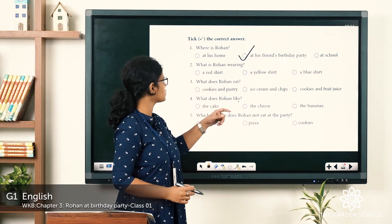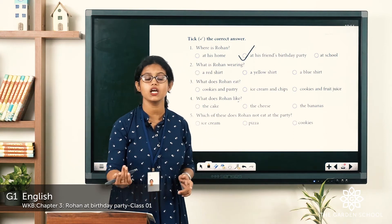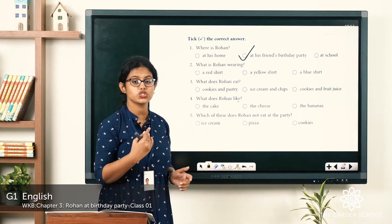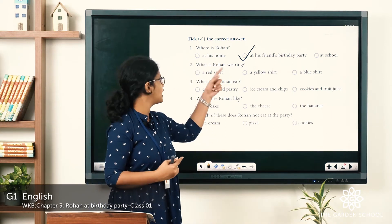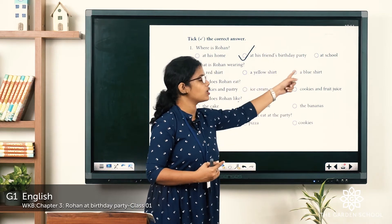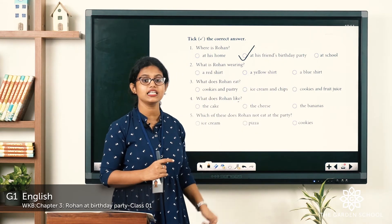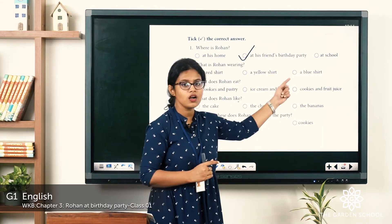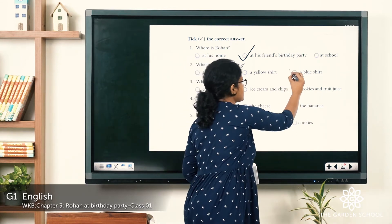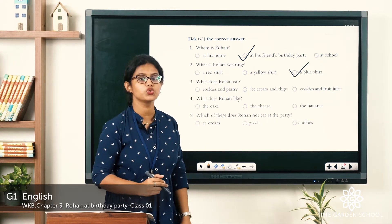Question two: What is Rohan wearing? The options are a red shirt, a yellow shirt, or a blue shirt. The passage clearly states he is wearing a blue shirt, so the answer is a blue shirt.